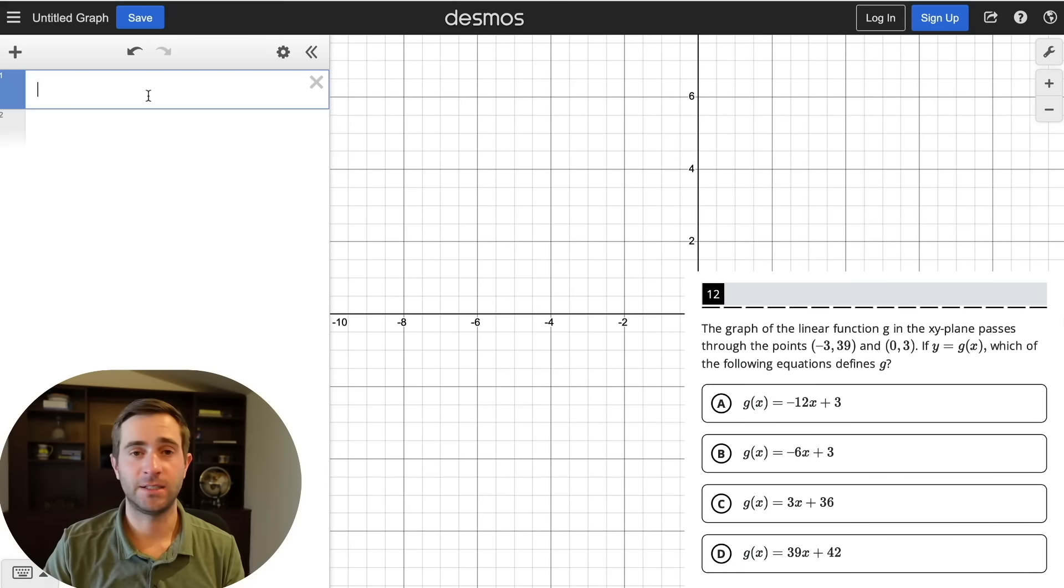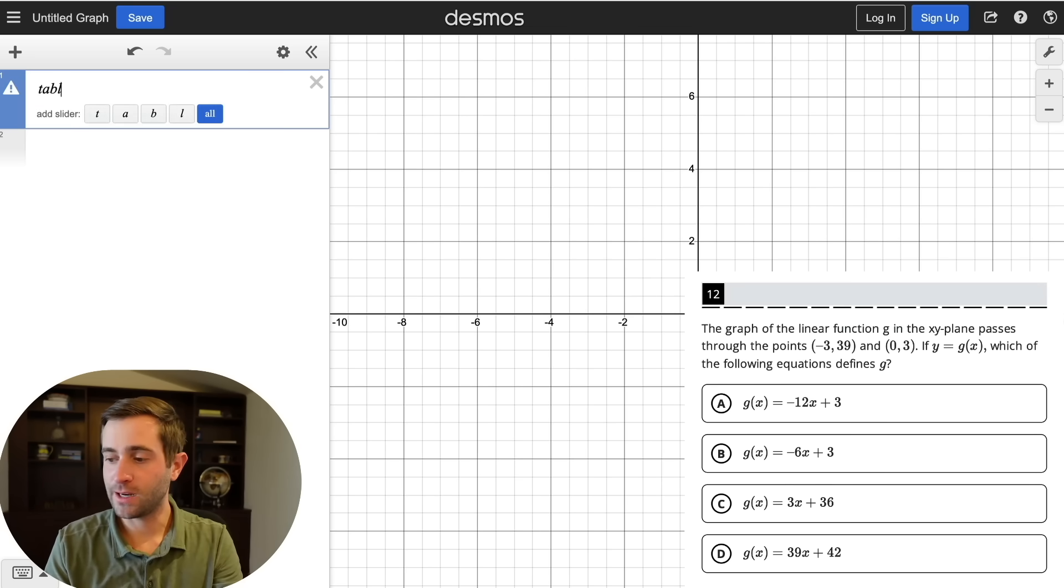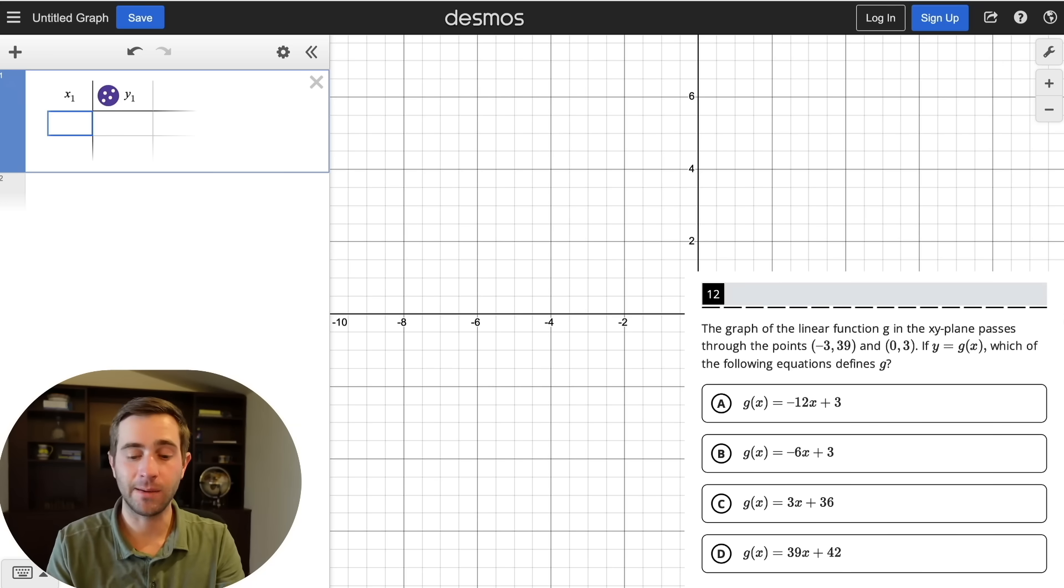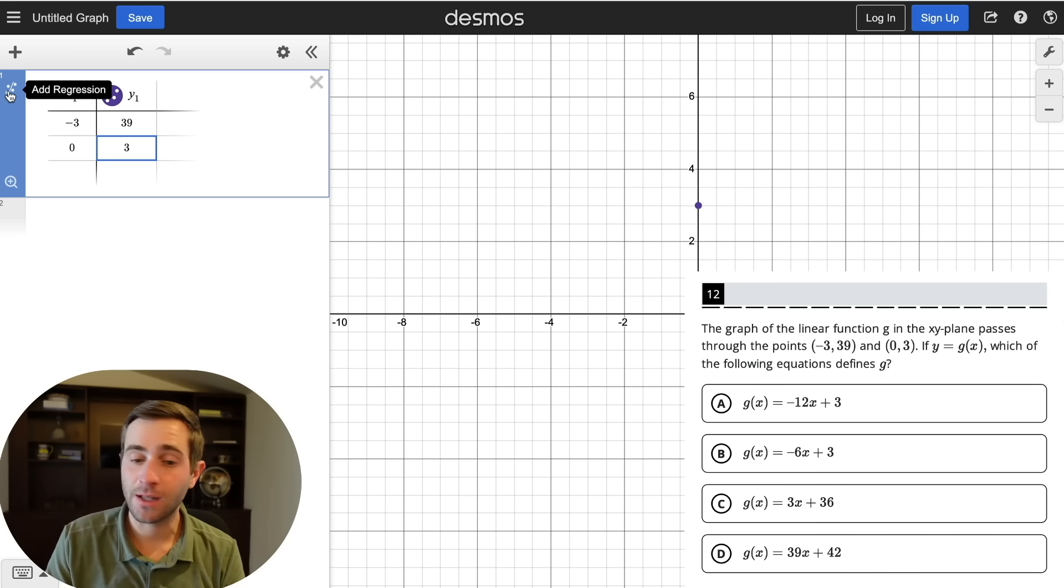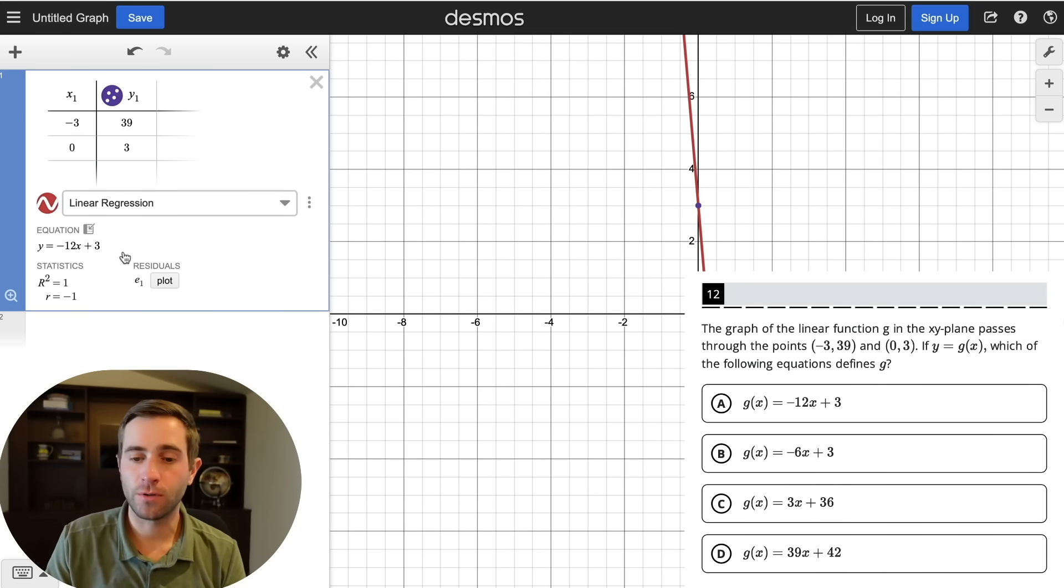We're going to talk about a more advanced Desmos hack here. And this is going to be the automatic regression tool. We're only going to worry about this for linear equations. But here we see the graph of the linear function G in the XY plane passes through the points negative 3 comma 39 and 0 comma 3. So you're simply going to type table in and you're going to put those two points in. And now what you're going to see is this little button is going to pop up, you're simply going to click add regression. And it's going to solve for the entire equation of the line. So our equation is y equals negative 12x plus 3. That means our correct answer is g of x equals negative 12x plus 3. Anytime you're given two points and it asks for the equation of the line, you can use this really amazing trick.